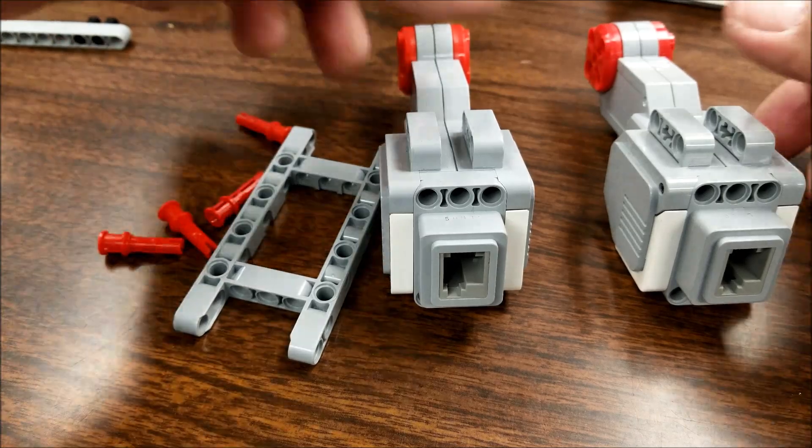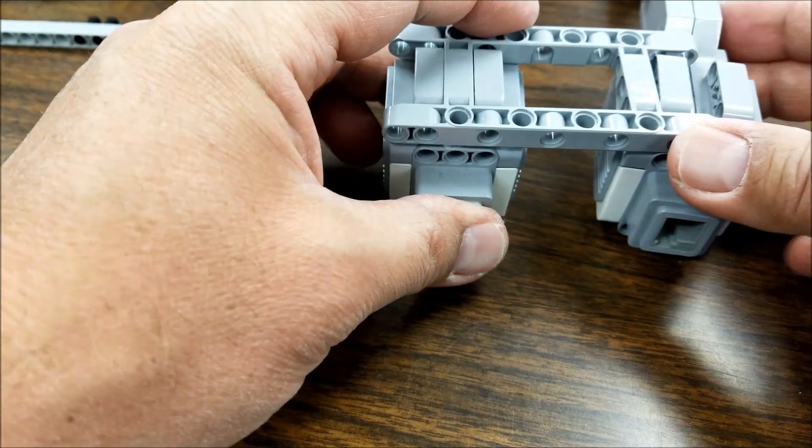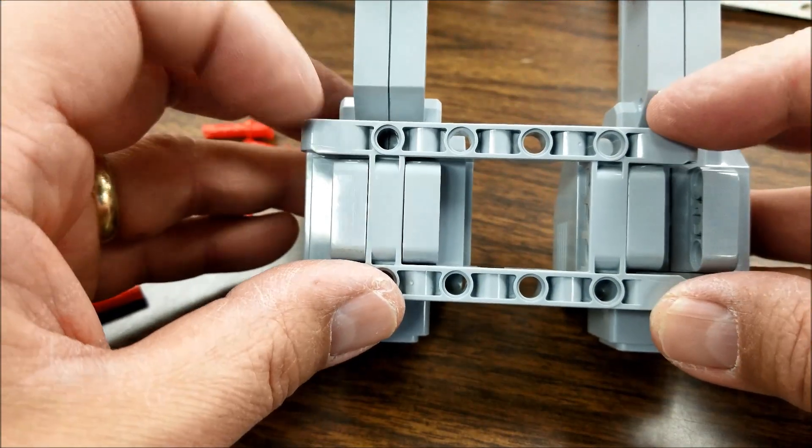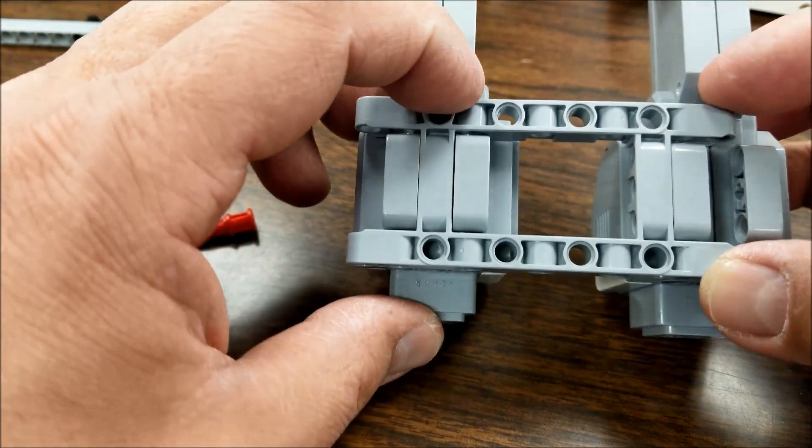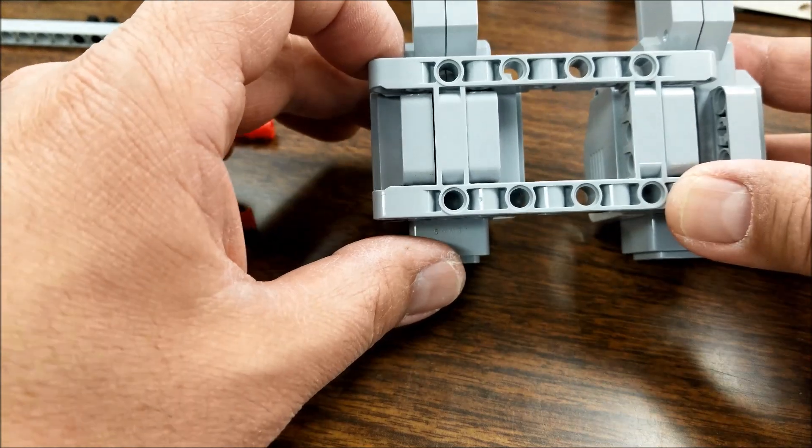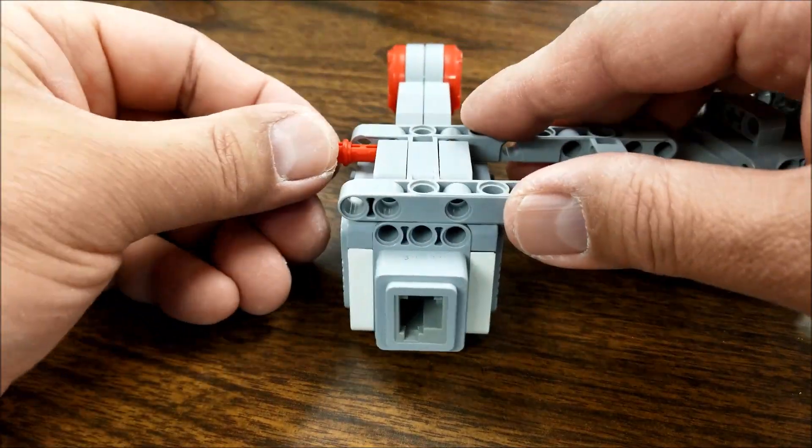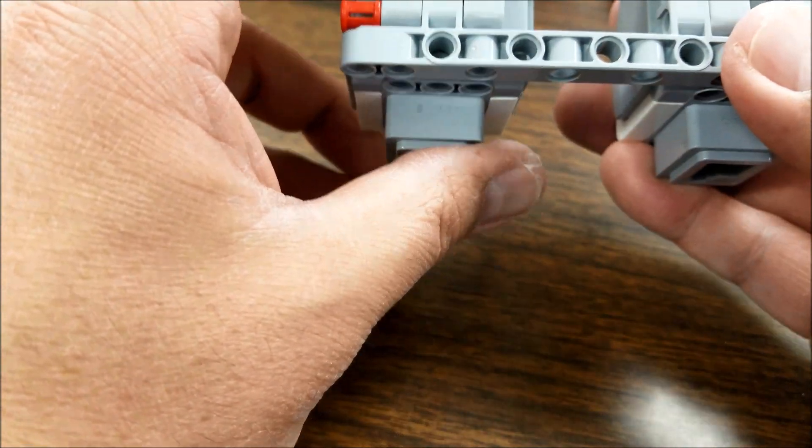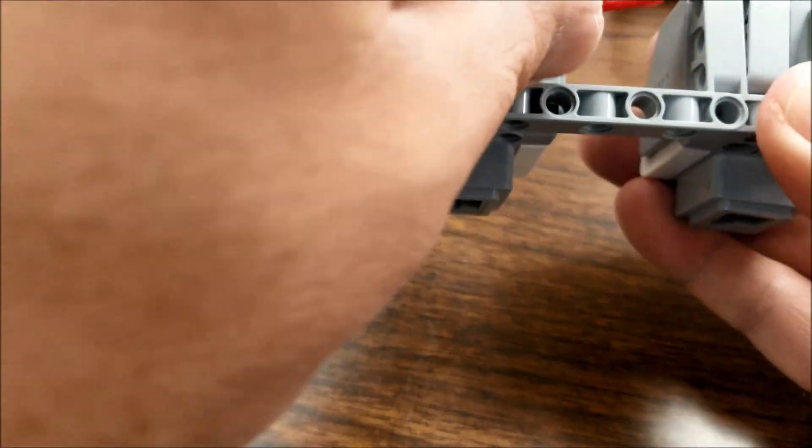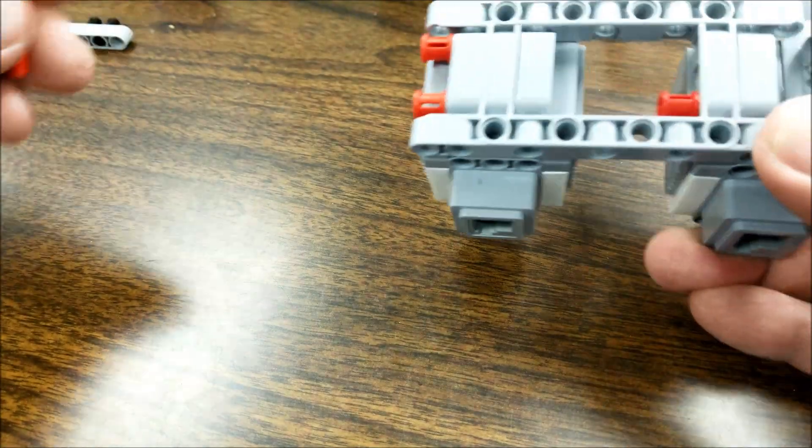So here we go. We're going to put this H frame like this and we're going to put these red connectors right in here. I'll just do one side first. And then I'm going to put this other side right here. Got to have these tiny fingers, which I don't have.